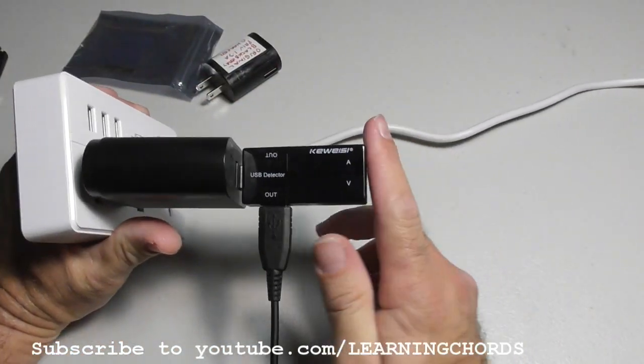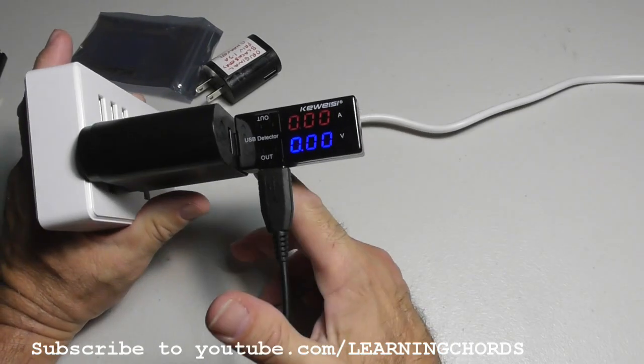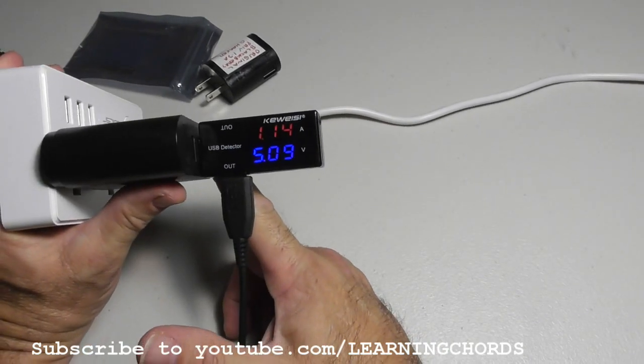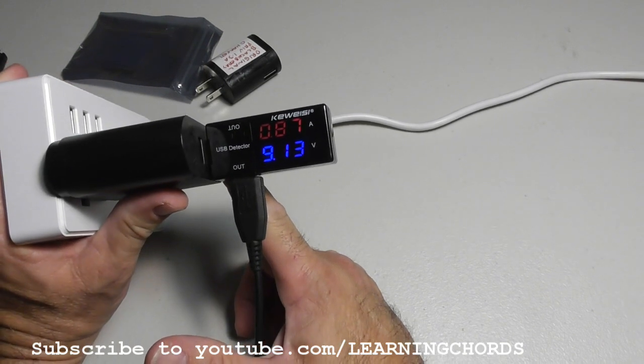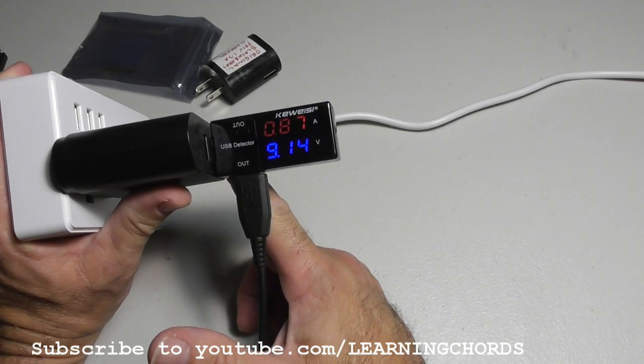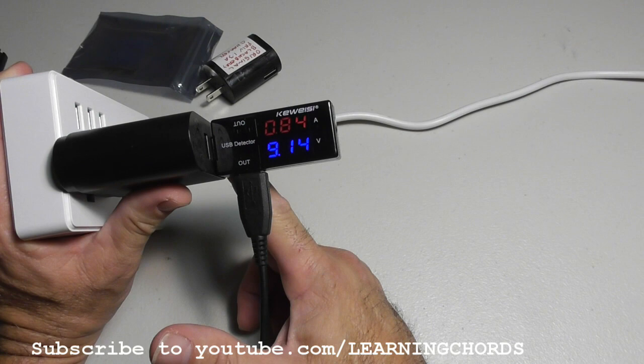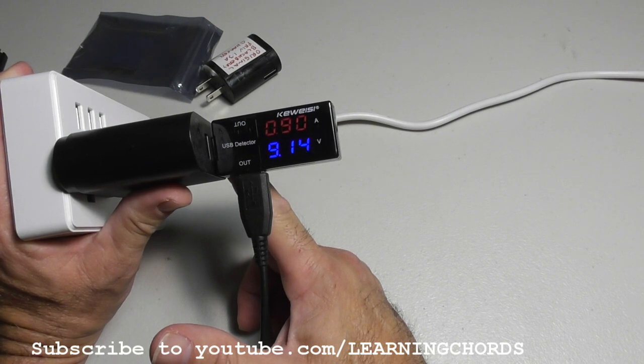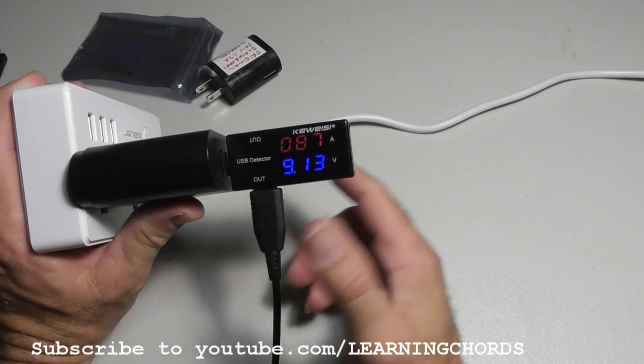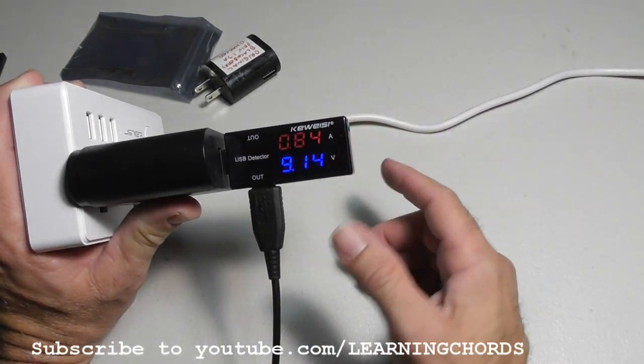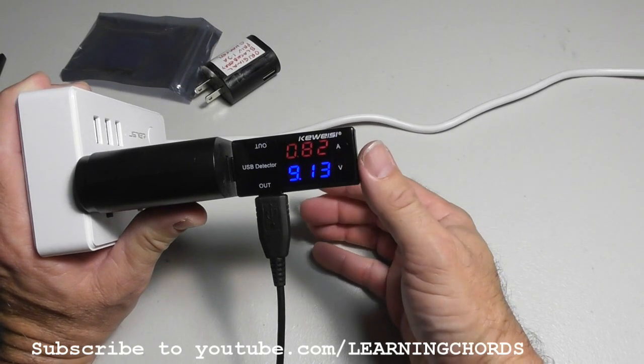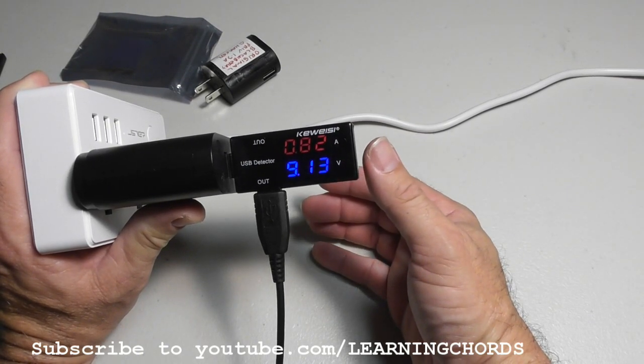So let's turn it this way and let's see what we get. Do we get anything? Looks like it's showing that we're getting nine volts. I think that's what it is - nine volts at 0.87 amps. I don't know if this does anything, does this do anything?